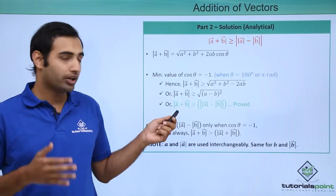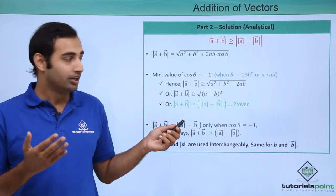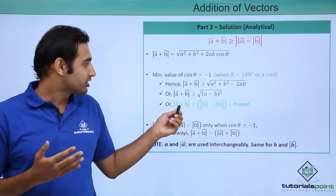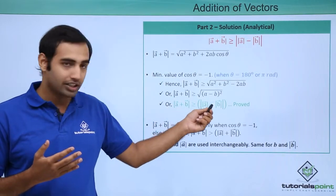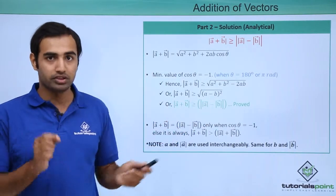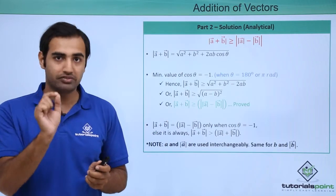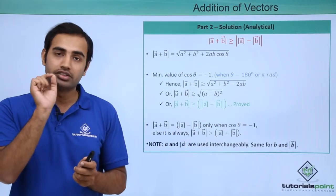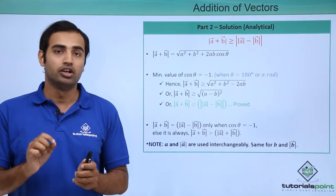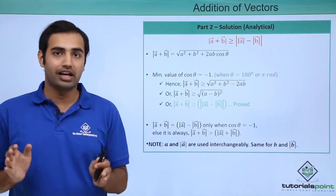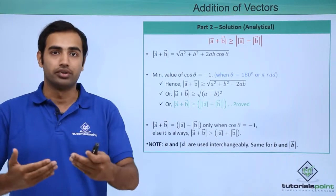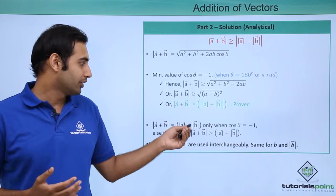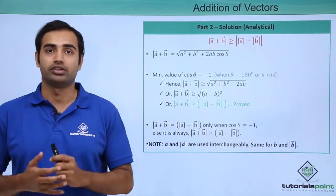Looking at this carefully, this expression will be exactly equal only for a specific angle of pi radians. For all other angles, the modulus of A plus B will be more than the modulus of the difference of the magnitudes. That is exactly what is established by this inequality.